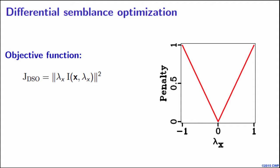Commonly the defocusing of energy in the extended domain is quantified by differential semblance optimization. This is the DSO objective function where the horizontal space lag plays the role of a penalty operator by annihilating the energy at zero lag location and amplifying it elsewhere.